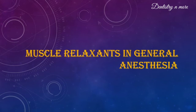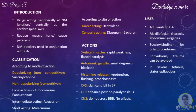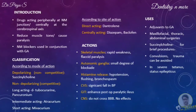Hello everyone. In this video we shall discuss the short note answer for muscle relaxants in general anesthesia. Muscle relaxants are drugs that act peripherally at the neuromuscular junction or muscle fiber itself, or centrally in the cerebrospinal axis to reduce muscle tone and/or cause paralysis. There are two types: those which act peripherally, known as neuromuscular blockers, and those which act centrally on the cerebrospinal axis.